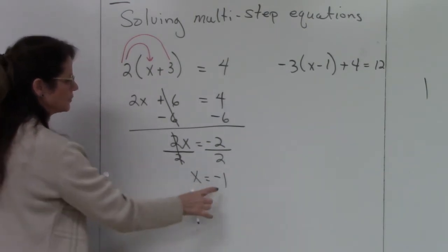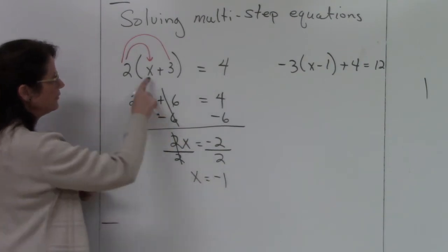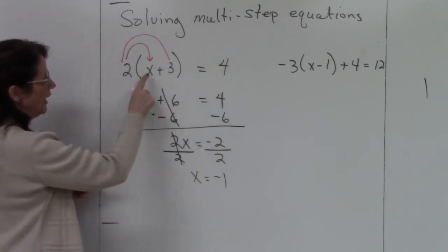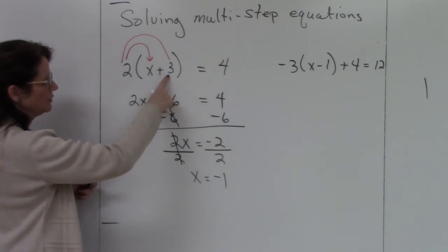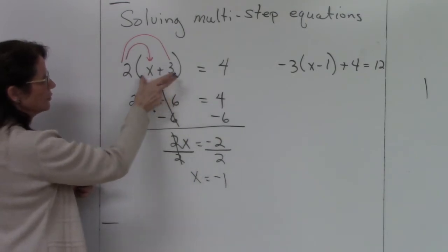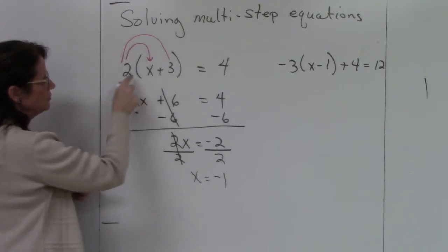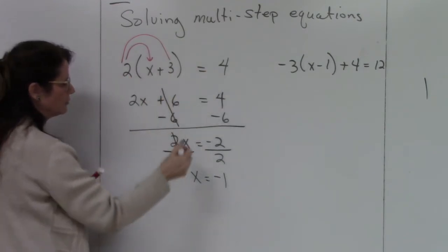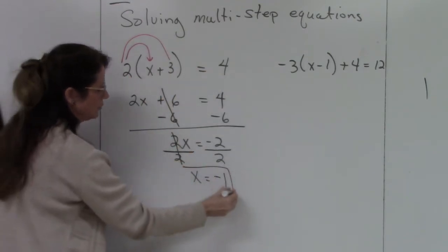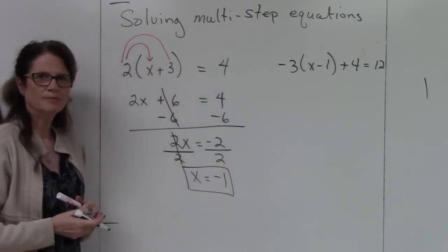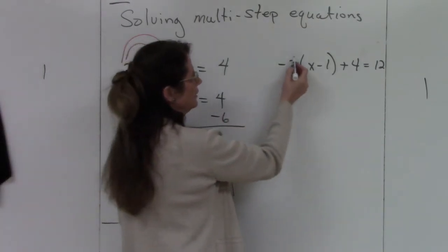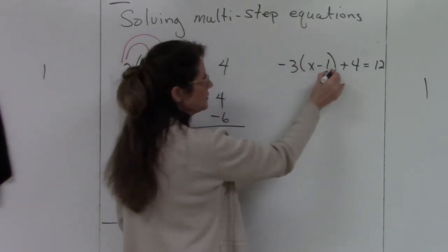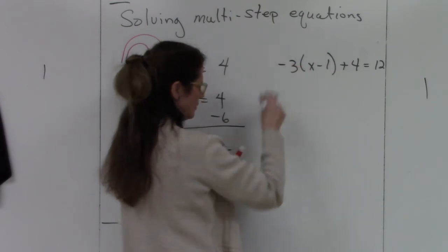You can always check — always go back and check. If I plug negative 1 back into the original, I have negative 1 plus 3, which is 2 inside the parentheses. Then 2 times 2 does give me 4, so I know that is the correct answer. Okay, let's try the next one — negative 3 times the parentheses.